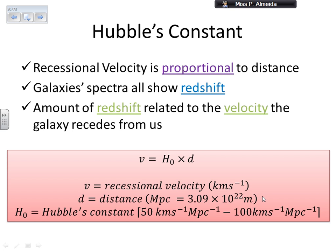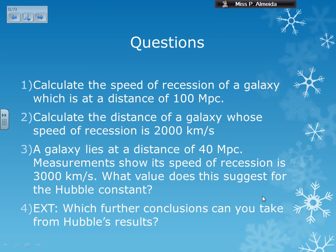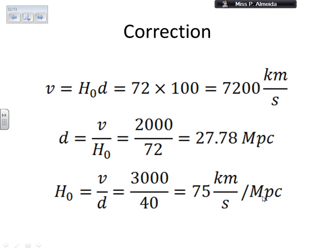Pause the video and give it a go to these questions. I have a couple of questions: one about the speed, one about the distance, one about the value of the Hubble constant, and another about which conclusions you can take from Hubble's results. The velocity is the constant times the distance, so this gives you 7200 kilometers per second. Always put the units, always put your working out.